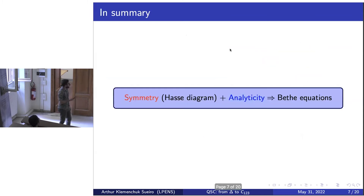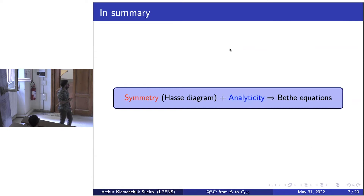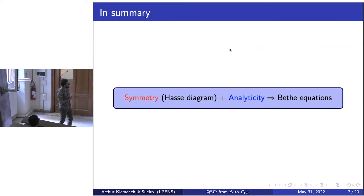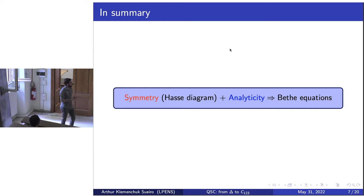What is nice about this construction is that it generalizes super easily to any GL(n|m) integrable super spin chain. In this general case, we will have 2^(n+m) Q functions and the Q-system will be a bit more complicated, but the idea is the same. For example, for a GL(3) spin chain, the Hasse diagram is simply a cube. Writing QQ-relations and imposing polynomiality, we can get the nested Bethe ansatz equation for the model.